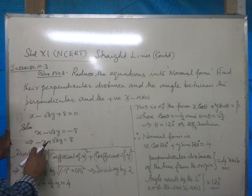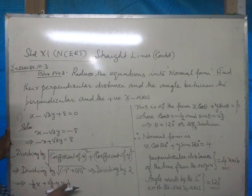Dividing by 2, we get negative half x plus root 3 by 2y is equal to 4.